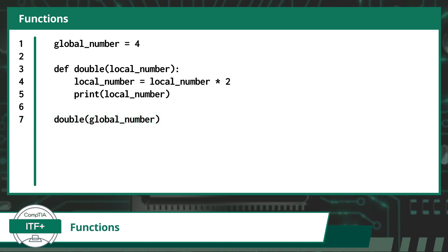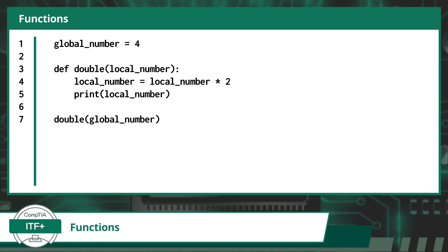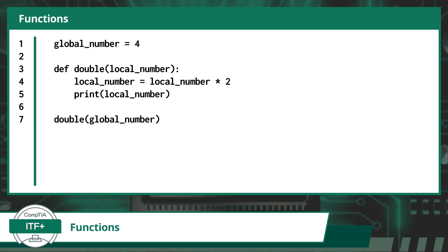Now, one more concept to learn before I wrap up this video on functions. I would like to teach you about global and local variables. Global and local variables are fundamental concepts in programming that define the scope, or accessibility, of variables within a program. A global variable is one that is defined outside of any function or code block. It holds a scope that extends throughout the entire program, enabling it to be accessed and modified from any part of the code. These variables are often declared at the beginning of a program.